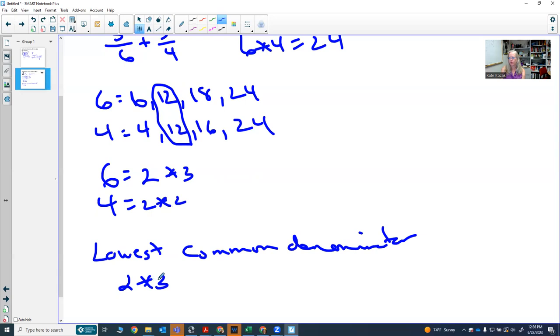So pretty much all you need to do is put another 2 in here, and then you'll notice that you have a 2 times 2 is a 4, and a 2 times 3 is 6. You multiply these together, you get 12, and so 12 is your lowest common denominator.